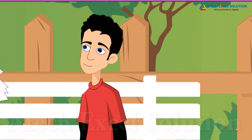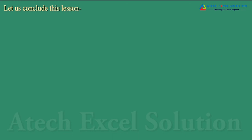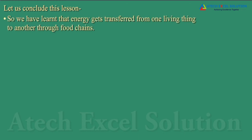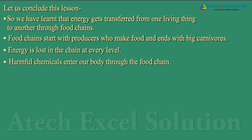When we wash our food, we only remove the dirt outside but not the chemicals inside. Sad but correct. To conclude: energy gets transferred from one living thing to another through food chains. Food chains start with producers who make food and end with big carnivores. Energy is lost at every level in the chain, and harmful chemicals enter our body through the food chain.